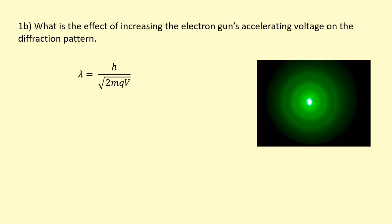What is the effect of increasing the electron gun's accelerating voltage on the diffraction pattern? If I increase the accelerating voltage, this will cause the wavelength to decrease. So what effect will this have on the pattern? We can use the diffraction grating formula: d sin theta equals n lambda.